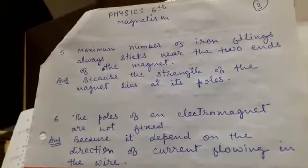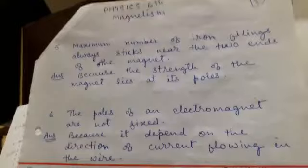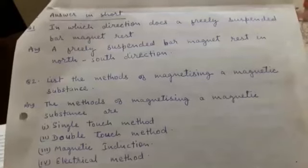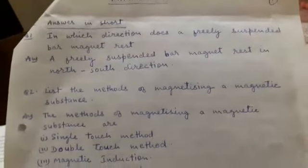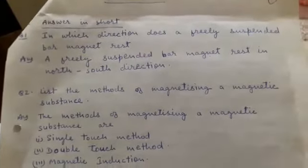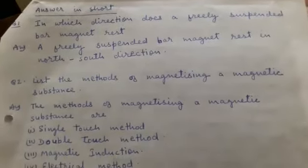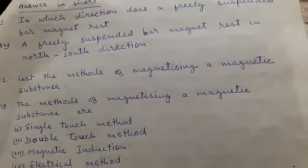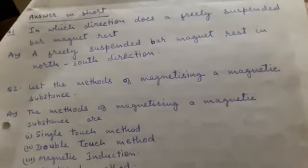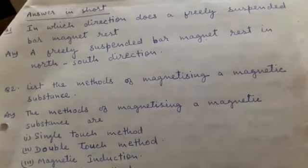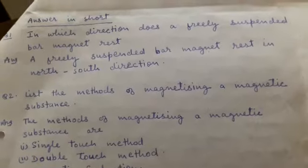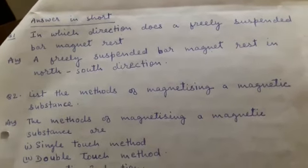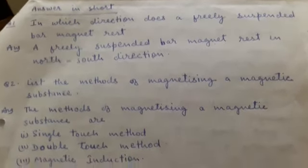Question 6: The poles of an electromagnet are not fixed — why? Because it depends on the direction of current flowing in the wire. Now we will see the next section: Answer in Short. First question: In which direction does a freely suspended bar magnet rest? A freely suspended bar magnet rests in the north-south direction.